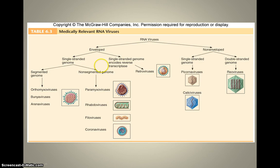A retrovirus has a single-stranded genome encoding for reverse transcriptase — that's the negative sense virus, the one that has RNA that needs to be transcribed. Human cells don't typically transcribe RNA; we transcribe DNA. So retroviruses carry around their own enzyme called reverse transcriptase in order for the host cell to be able to transcribe RNA even though it doesn't typically do that.